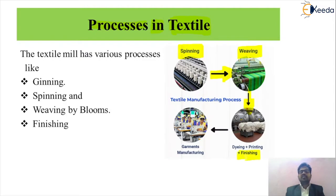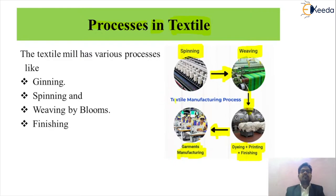In the finishing process, we use different types of sub-processes, including drying and painting of the material. After the finishing process, the product goes to the garments manufacturing department, where we manufacture different types of textile by-products such as different types of cloths and packaging materials. This is the last process by which we get the output product of the textile industry.